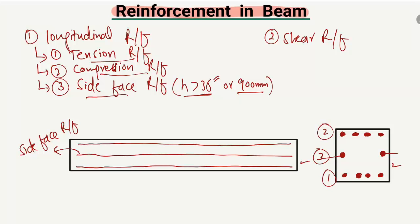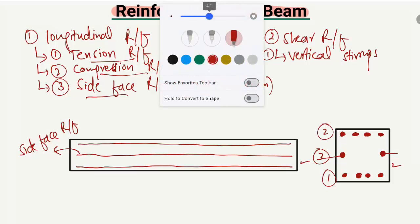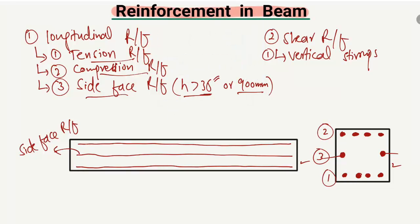Now, what are the shear reinforcement? These reinforcements are provided mainly to resist the shear stresses or shear forces. There are types in the case of shear reinforcement. The first one is the vertical stirrups, which are mainly used to take the shear load. They are provided vertically across the beam. In the cross-section, they are provided with single or double legs. These are the vertical stirrups.